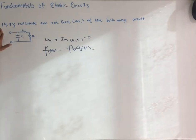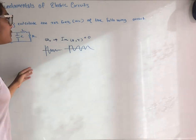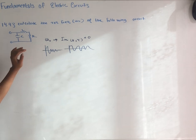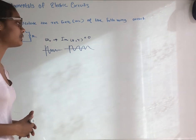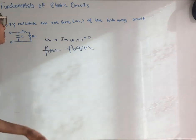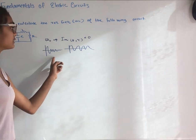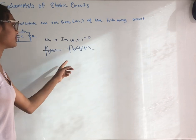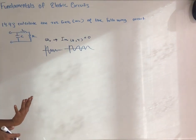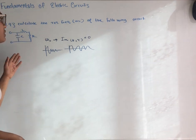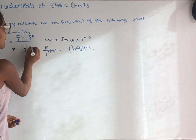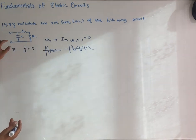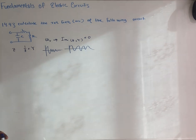This is problem 14.43 from Fundamentals of Electric Circuits: calculate the resonant frequency omega naught of the following RLC circuit. When you have an inductor and capacitor, you get oscillation. The critical frequency is when you achieve resonance, or when the frequency equals the damping frequency. At critical frequency you get a nice sinusoidal wave. We find omega naught by writing the impedance or admittance of the circuit, then setting the imaginary part equal to zero.